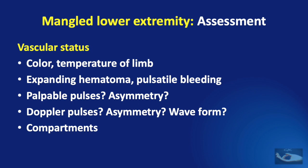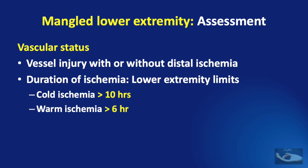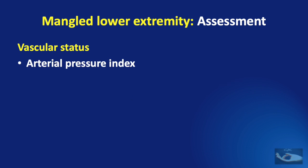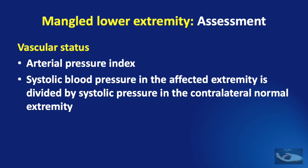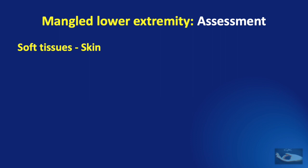We also look for evidence of compartment syndrome. What we are looking for is vessel injury with or without distal ischemia. When there has been ischemia, we need to calculate its duration. In the lower extremity, the limits of survival after ischemia are 10 hours of cold ischemia and 6 hours of warm ischemia. We also need to measure the arterial pressure index — the systolic blood pressure in the affected extremity divided by that in the contralateral normal extremity. If the value is less than 90%, or if there is an absent distal peripheral pulse, a vascular surgical intervention will most probably be necessary.